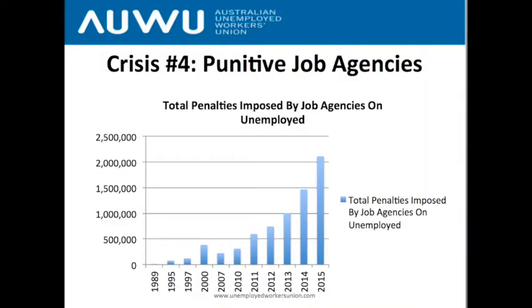The next major crisis is the punitive job agency system. This is where the Unemployed Workers Union does most of its work — helping people deal with this very punitive system where unemployed workers have nowhere else to turn. The government hasn't provided any service for people trying to deal with job agencies, which is one of the reasons why the UWU set up its hotline and advocacy service to fill that gap.